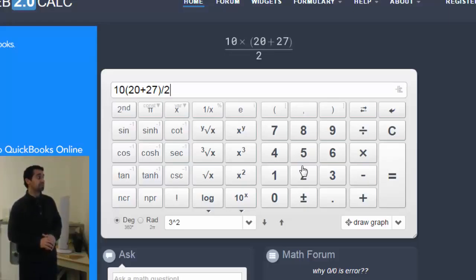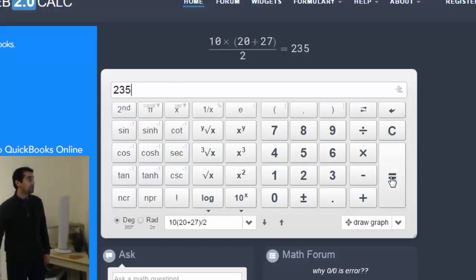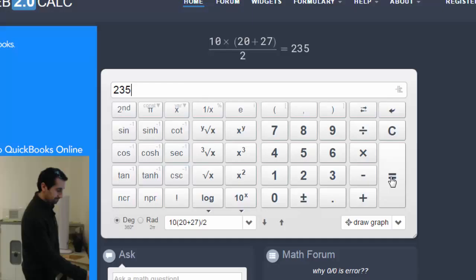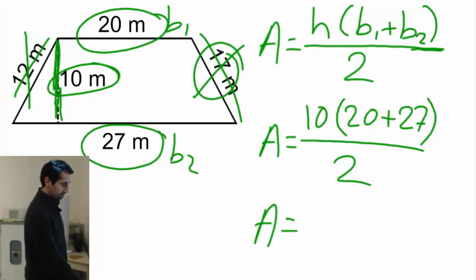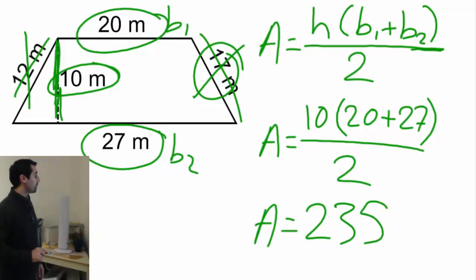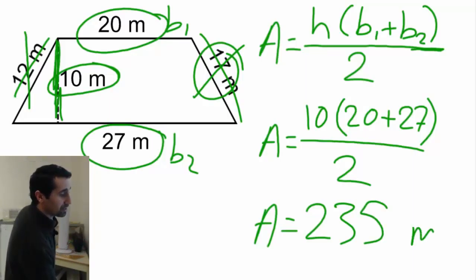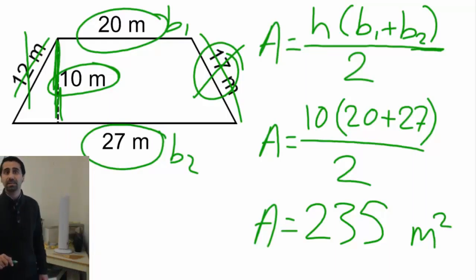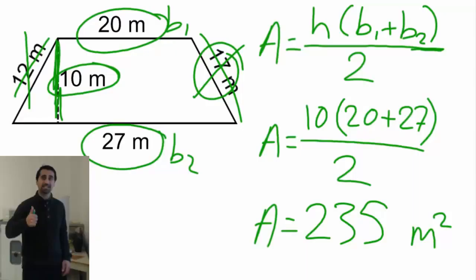10, open bracket, 20 plus 27, close the bracket, and divide it by 2. Equals, that's 235. So I'm going to write down 235 here. And I'm not going to forget the unit, which is meter. Since this is area, it's supposed to be meter squared. That's it. Let's practice.